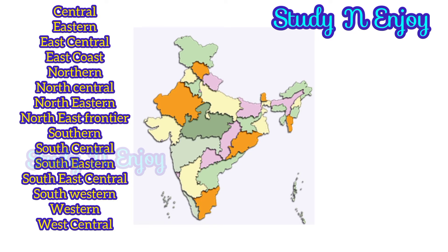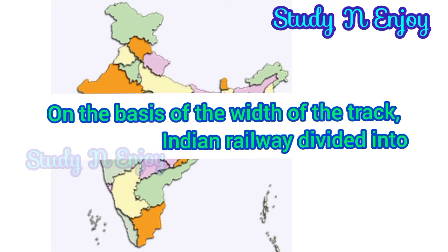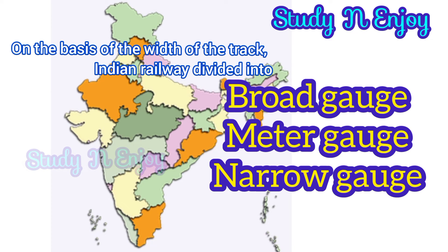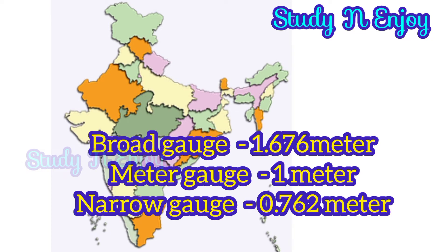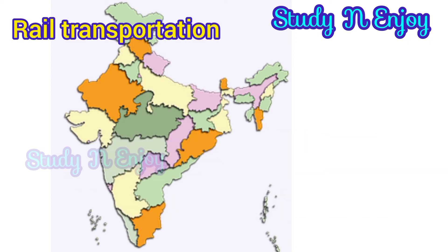Indian Railways have been divided into three categories on the basis of the width of the track. They are Broad Gauge, Meter Gauge, and Narrow Gauge. The distance between rails in Broad Gauge is 1.676 meters, in Meter Gauge is 1 meter, and in Narrow Gauge is 0.762 or 0.610 meters. Narrow Gauge is generally confined to hilly areas.